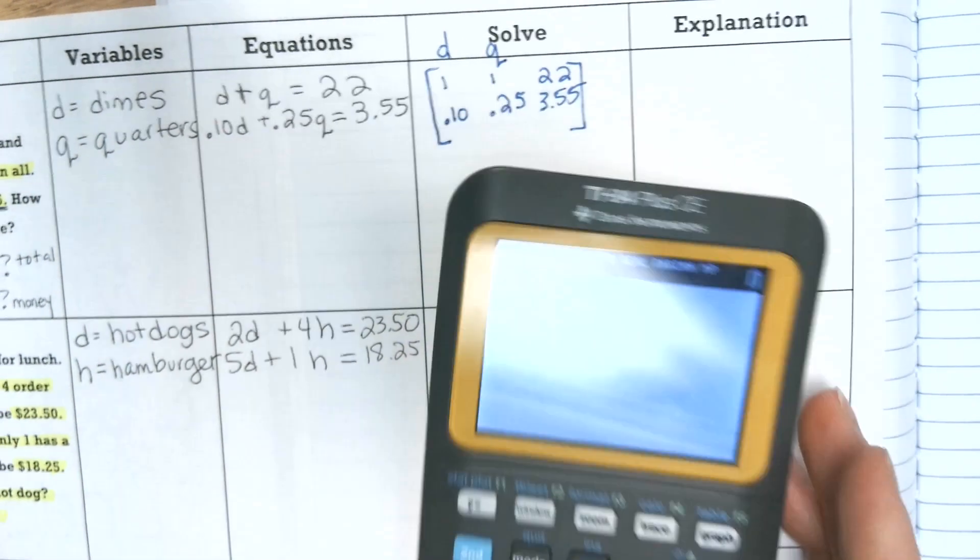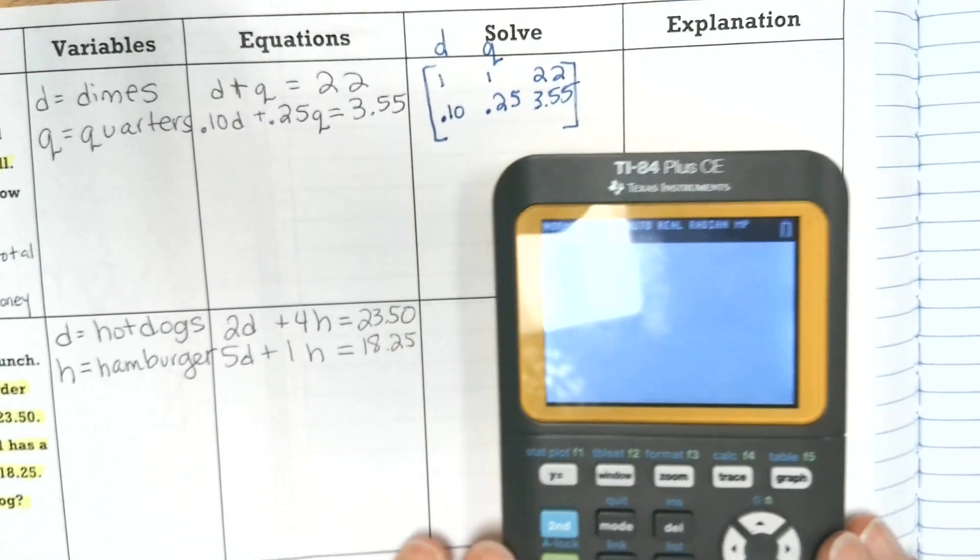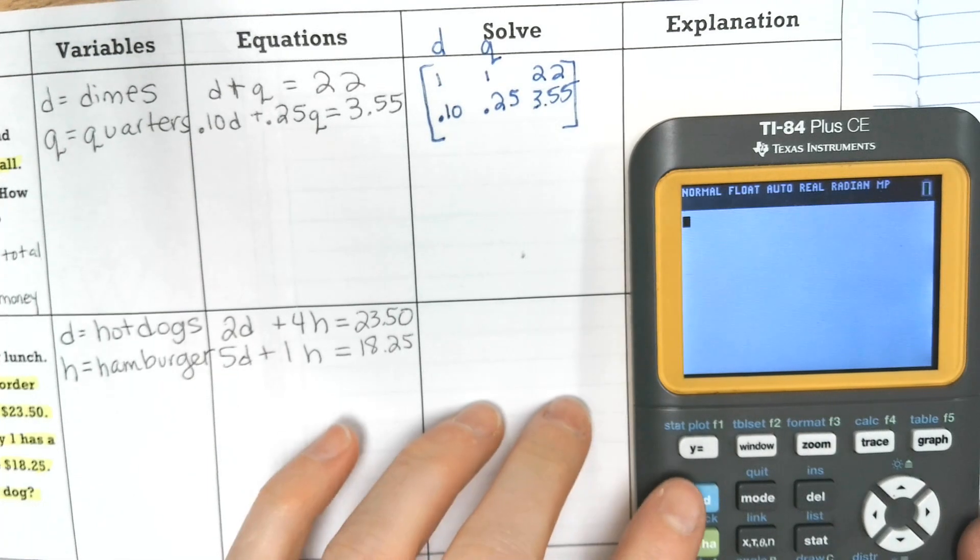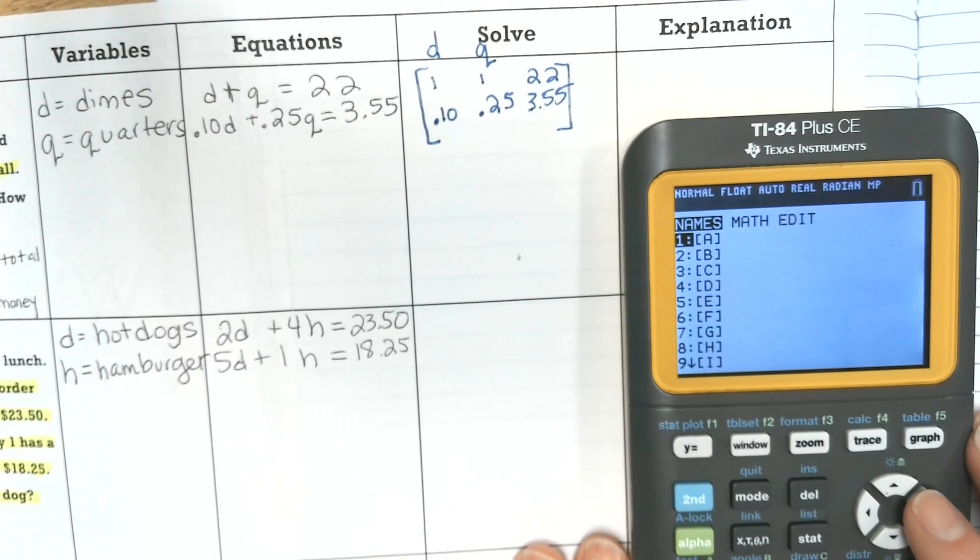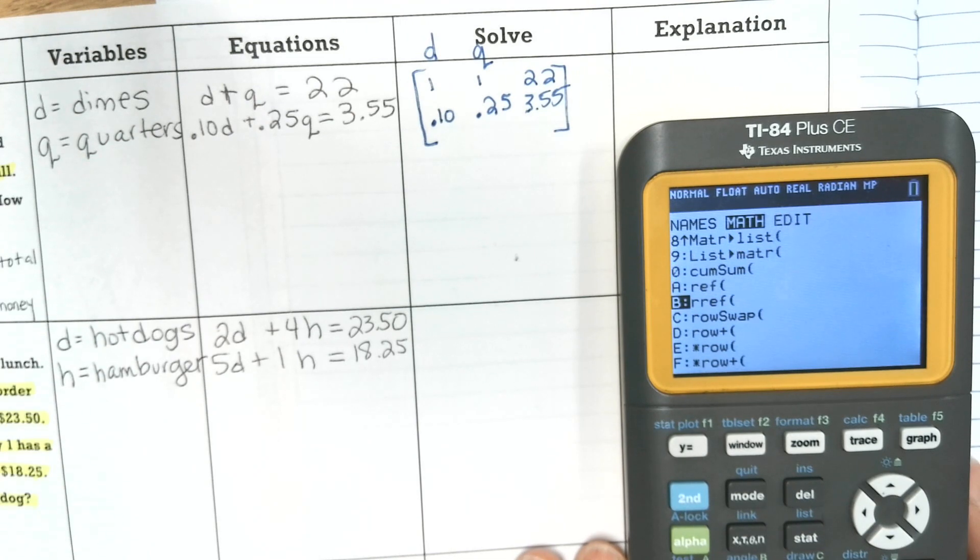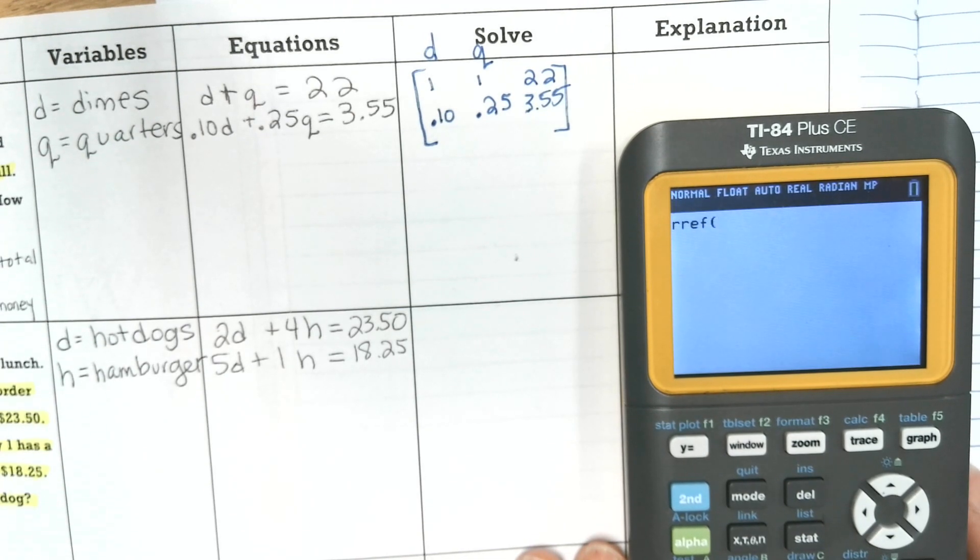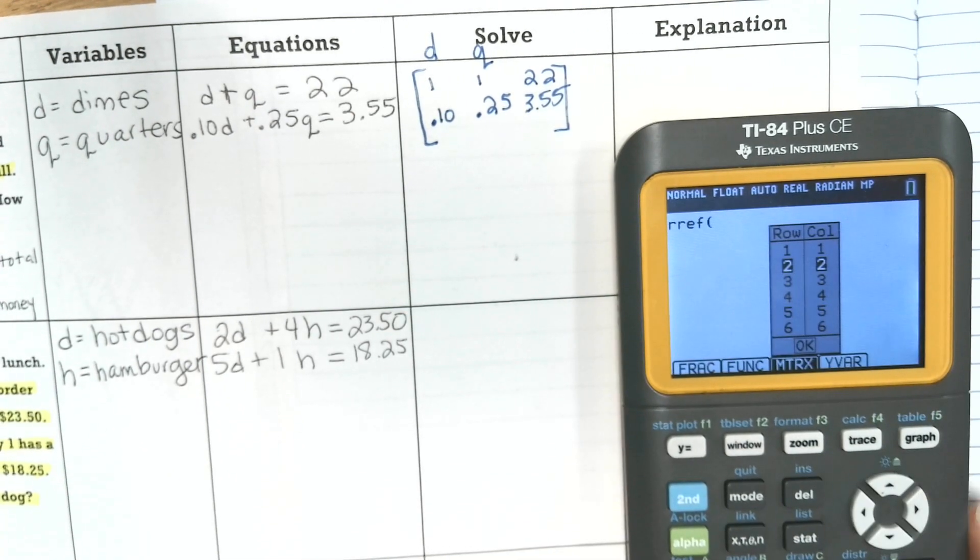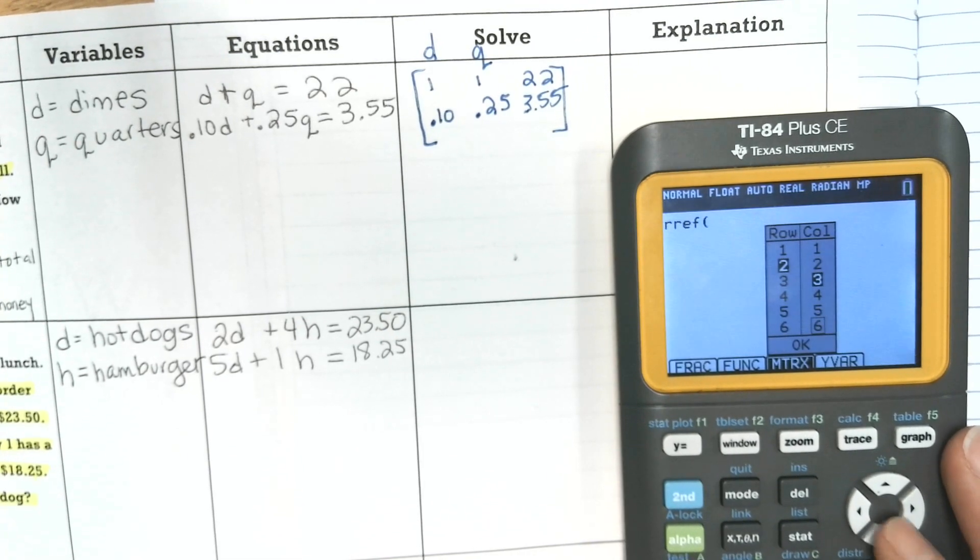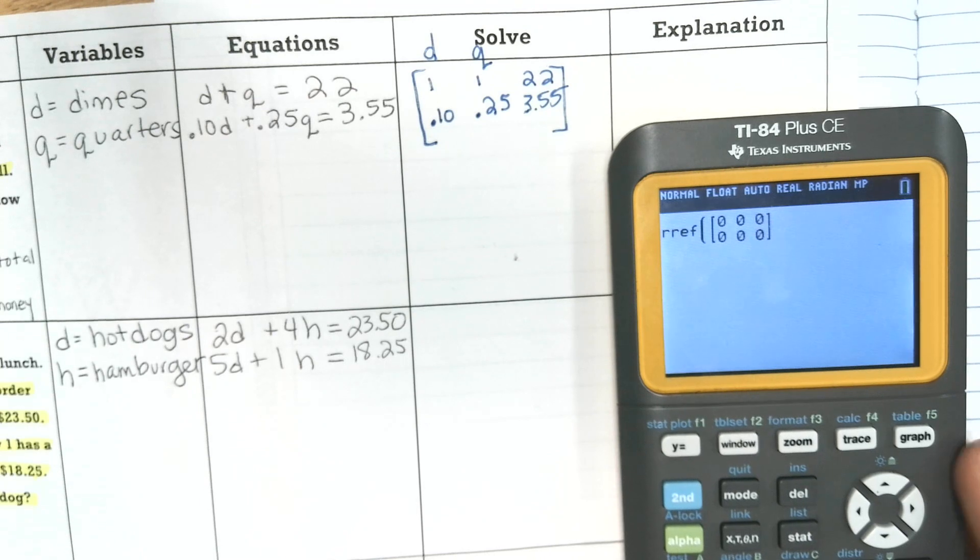So let's use our matrix. Hopefully you've cleared out the memory on your calculator. If you haven't, go ahead and do that. So second matrix over to math. Go to RREF, alpha zoom. Make sure you change it to a 2x3 and put in the numbers.